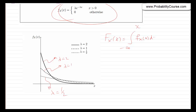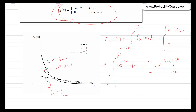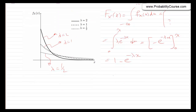Now let's find the CDF. The PDF is 0 for negative values, but for positive values it's just the integral from 0 to x of lambda e to the minus lambda u du. If you do this, it becomes negative e to the minus lambda u from 0 to x, which gives 1 minus e to the minus lambda x. So we can write the CDF of the exponential random variable as 1 minus e to the minus lambda x times u of x.